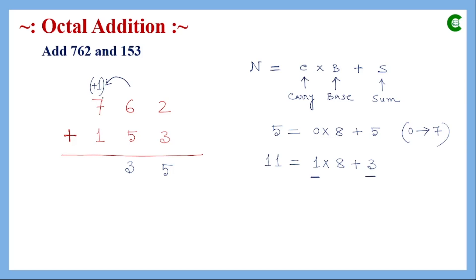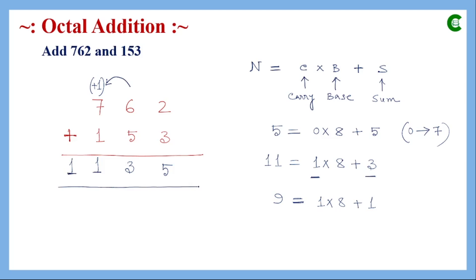Seven plus one gives eight, and then we add the carry of one, so the result at this position is nine. Nine is represented as 1 × 8 + 1, so the sum digit is one and the final carry is one. Since there are no more digits, we write the final carry here.